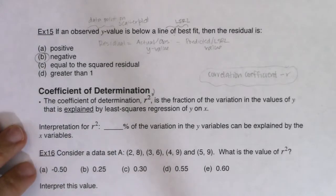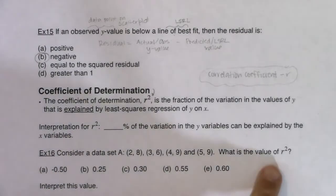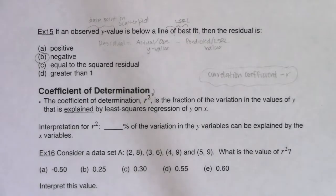Basically it's the percent of the variation in the y's that we can explain away, because variables are inherently varying — they are not constant. We can explain away a percentage of why the y variables are changing based on the least squares regression line or based on x.